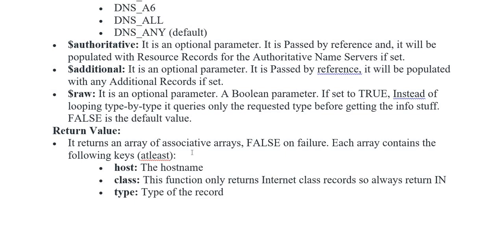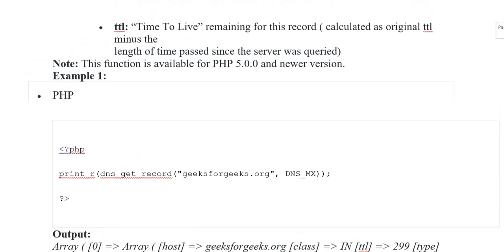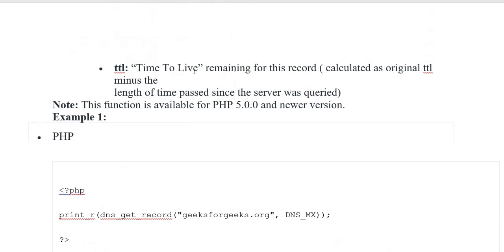Iske baad return value hai — yahan par jo hum put kar rahe hote hain, arrays of associative arrays, aur false on failure put kia gaya hai. Following keys put ki gayi hain: first aata hai host (the hostname), class (this function only returns internet class records and always returns IN), type (type of the record), aur ttl — time to live, remaining for this record, calculated error is original length of the time passed since the server was queried. Yeh function available hai PHP 5.0 variant ke liye.